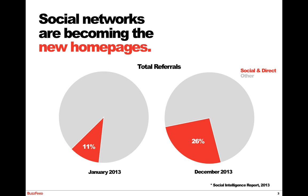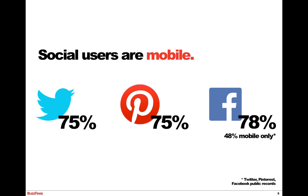By December 2013, that had dropped to just over half. Think about what device you were looking at that content on — if you came from a social channel, more than likely you were looking at it on a mobile device. Social users are mobile users. According to information from these companies, 75% of Twitter users, 75% of Pinterest users, and 78% of Facebook users are accessing the sites through mobile devices. Of that 78% of Facebook users, 48% are mobile only — they don't even look at the desktop version of Facebook.